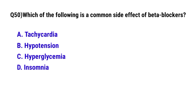Question number 50: Which of the following is a common side effect of beta blockers? The correct option is B: Hypotension.